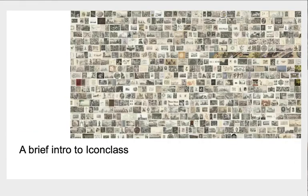Since its creation in the 1940s, the IconClass Subject Classification System has been considered as the Art Historian's Bicycle. It's not meant to replace the work done by cataloguers and art historians, but to make their work go faster and farther.